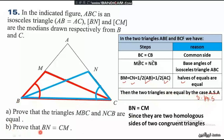Now prove that BN equals CM. Since BN and CM are homologous sides of the two congruent triangles MBC and NCB, they are equal. Therefore, BN equals CM, as they are two homologous sides of two congruent triangles.